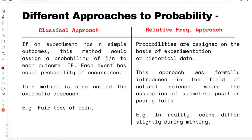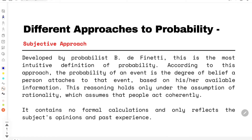In the relative frequency approach, we cannot assign 1/n to each outcome. The probability we assign is weighted on the basis of past experiments.